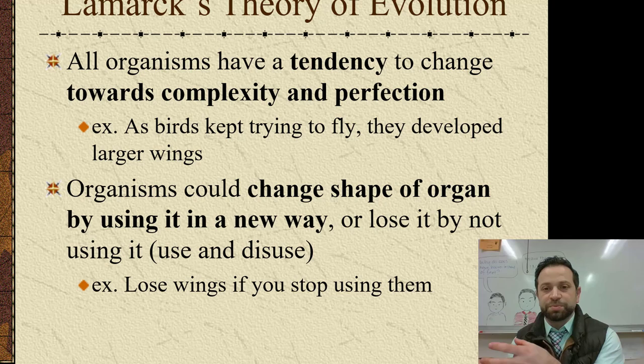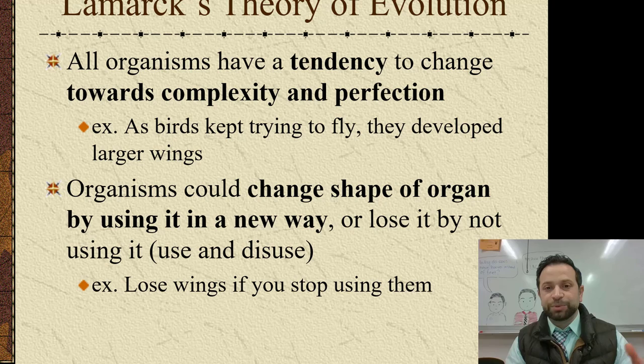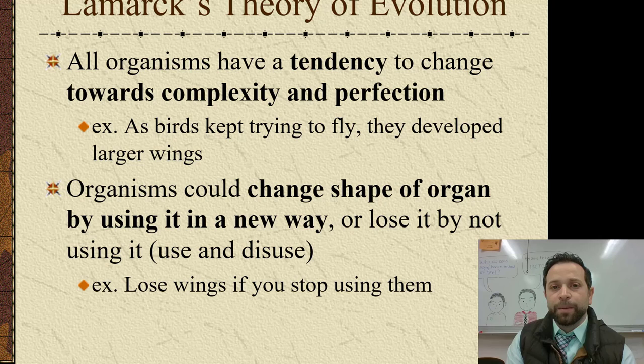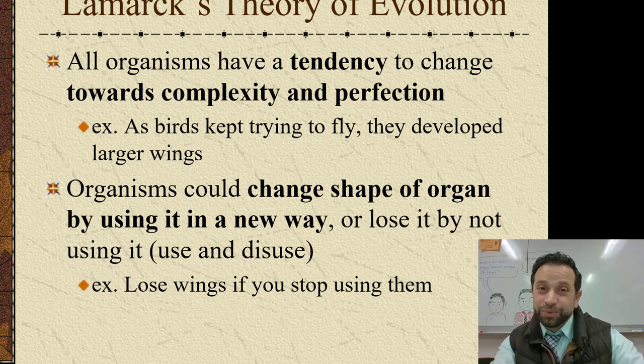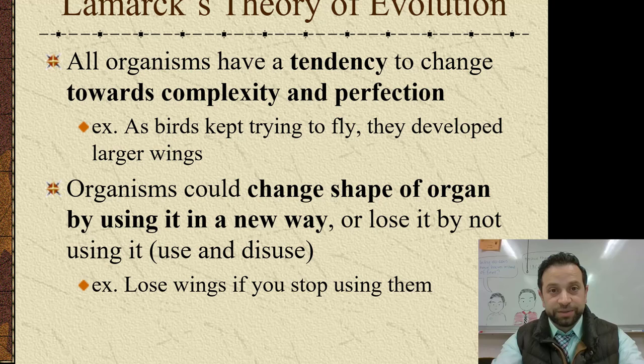For example, he said as birds keep trying to fly, they develop larger wings as they develop their flight skills. Organisms could actually change the shape of an organ by using it in a new way, or they could lose the use of that organ by not using it anymore — which is what we call use and disuse. Going back to the bird example, Lamarck would say that if birds stopped using their wings, they would eventually lose those wings. We know that Lamarck's theories of evolution are wrong, but we still want to give him credit for being the first to come up with his theories.